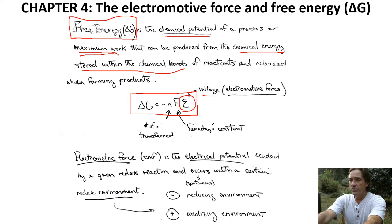Delta G equals negative NFE. F is just a constant, Faraday's constant. We need to consider the number of electrons transferred, and we have the voltage.